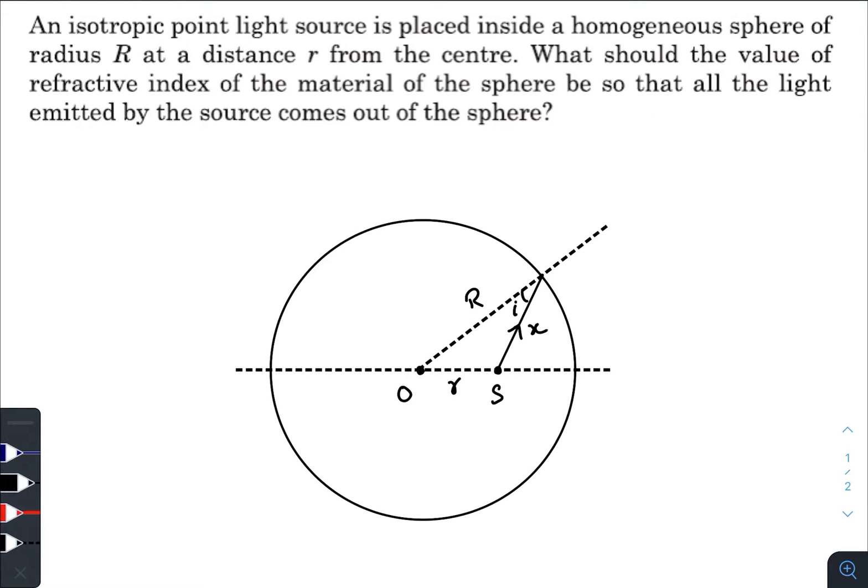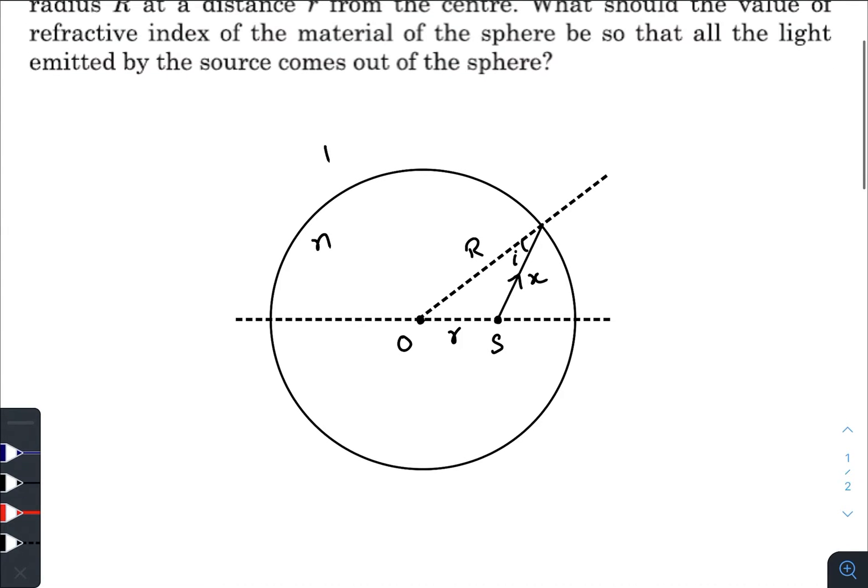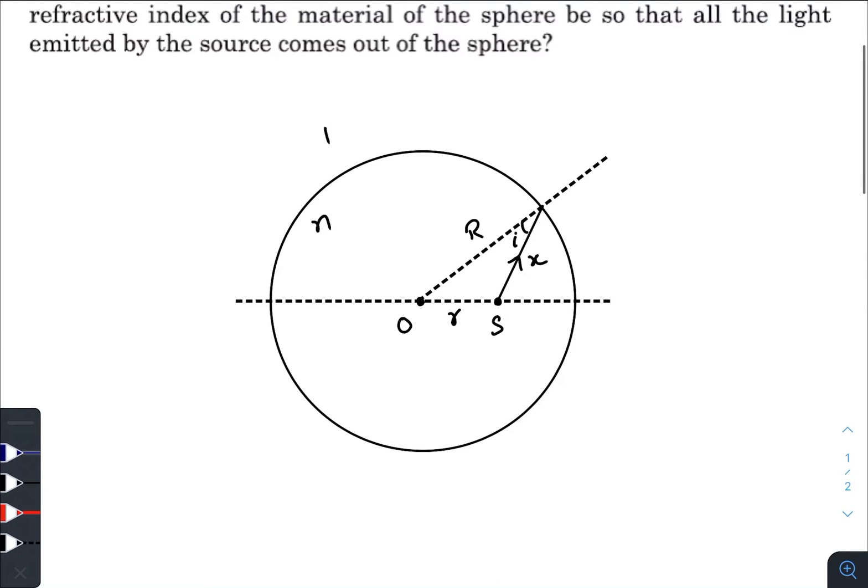First, let us consider that the refractive index is n of the sphere and the outer surface is 1. This is the center, this is the source where it is placed at a distance r from the center. This is capital R, this is small r, let us take this as x. What you are seeing on the screen is just one situation, one situation of all the possible situations that can happen.